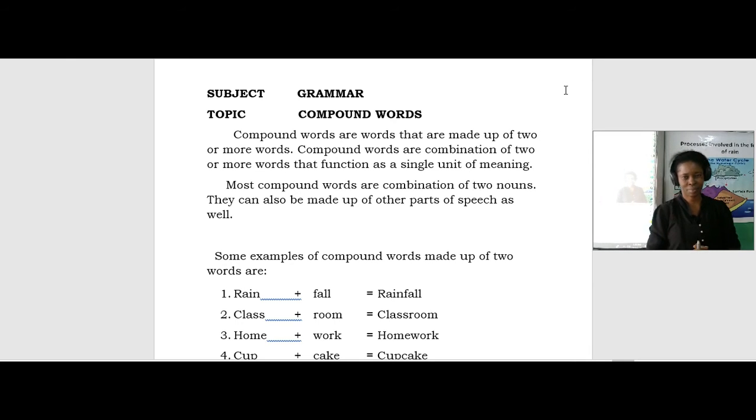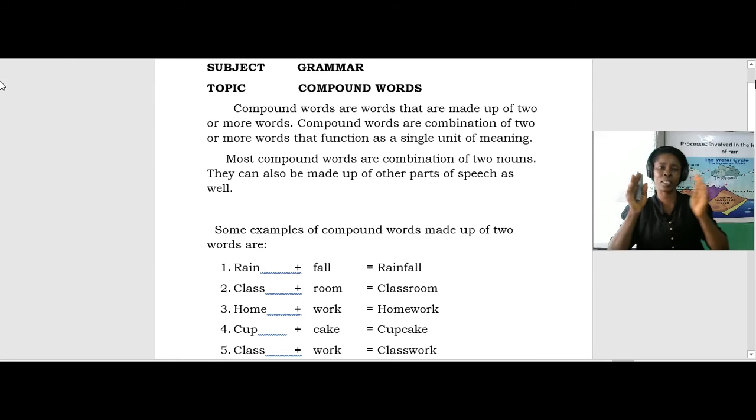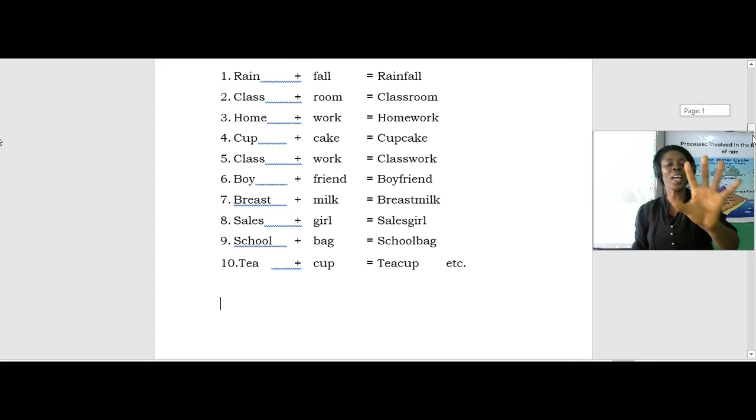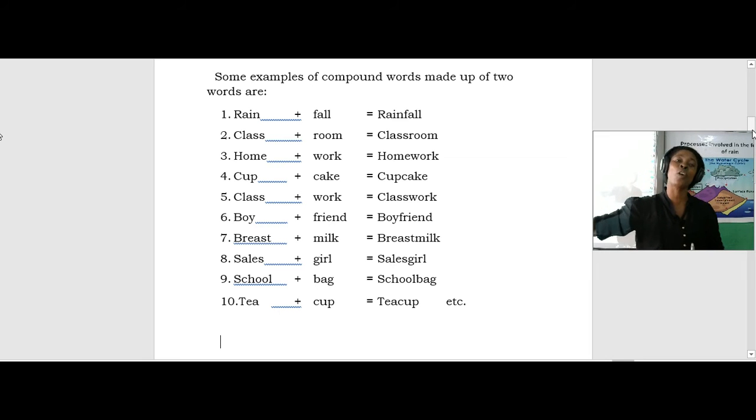Examples of compound words. Rainfall. I want you to have this in mind, that most compound words are made up of two nouns. We also have other compound words that are made up of other parts of speech. Rainfall is an example of compound words. If you look at this example, you find that there are two words. Rain and fall. Rain can stand on its own, while fall can also stand on its own. But this time they are coming together to form a unit. Rain plus fall giving us rainfall. So rainfall is a compound word.